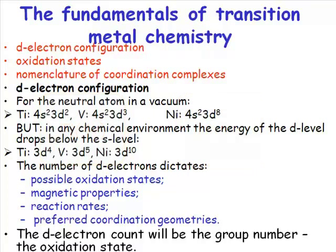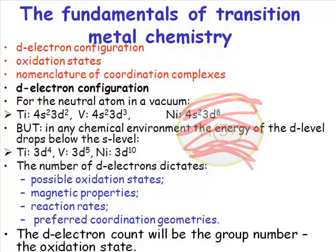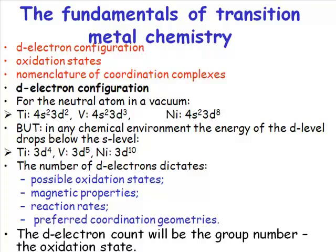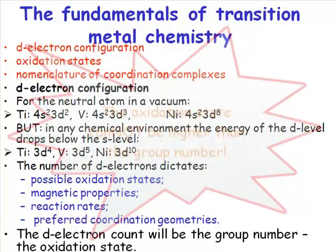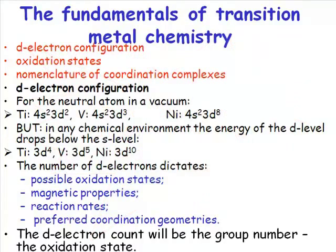cannot ever be titanium 5. You cannot have titanium 5 because you would have to remove 5 electrons and that would require you to remove an inner electron. And that is never going to happen in chemistry. It might happen in a mass spectrometer or an ionization device in the gas, in a vacuum phase again. But in a chemical environment, you never,